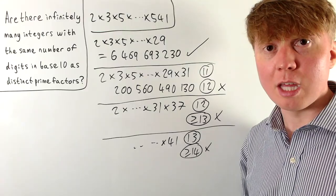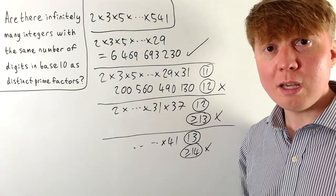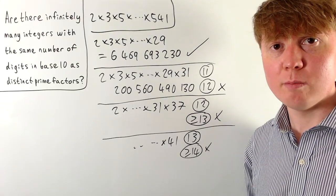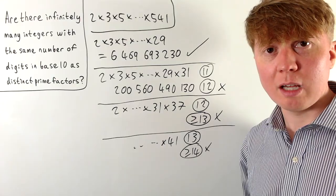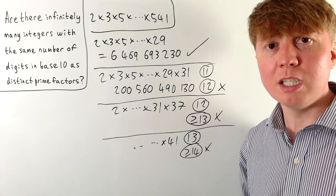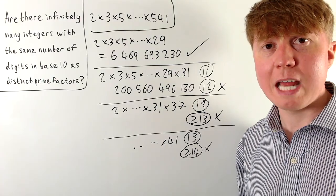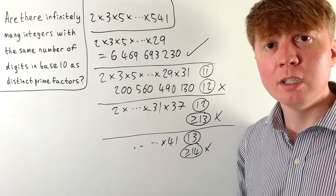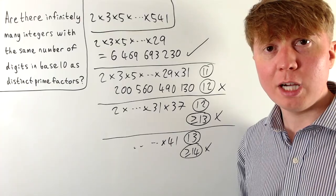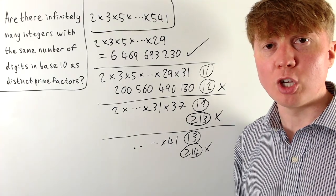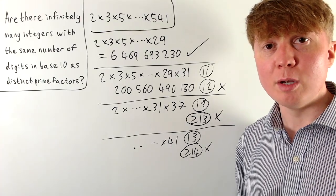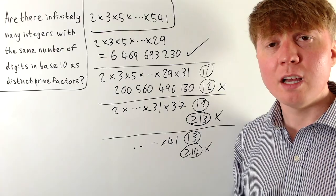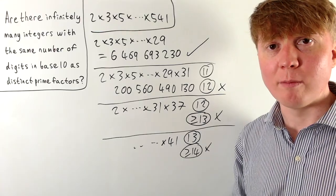We can conclude that there are definitely not infinitely many of these numbers. In fact, you'd only need to check up to ten-digit numbers to find them all. There are only finitely many numbers which have the same number of digits in base ten as distinct prime factors.